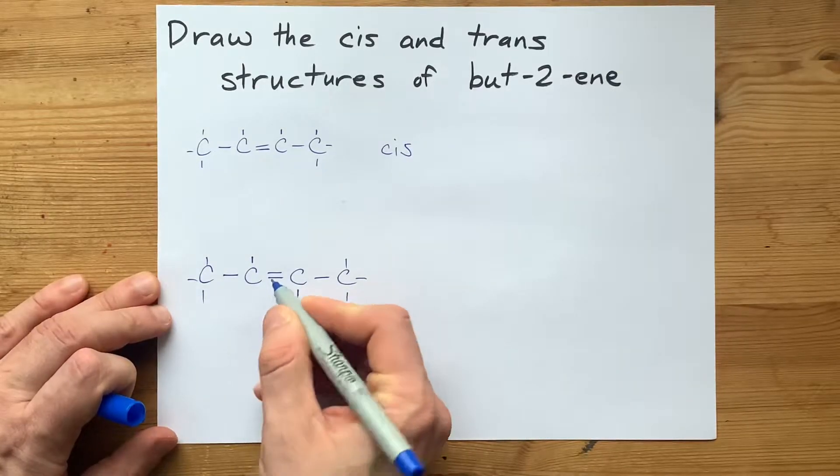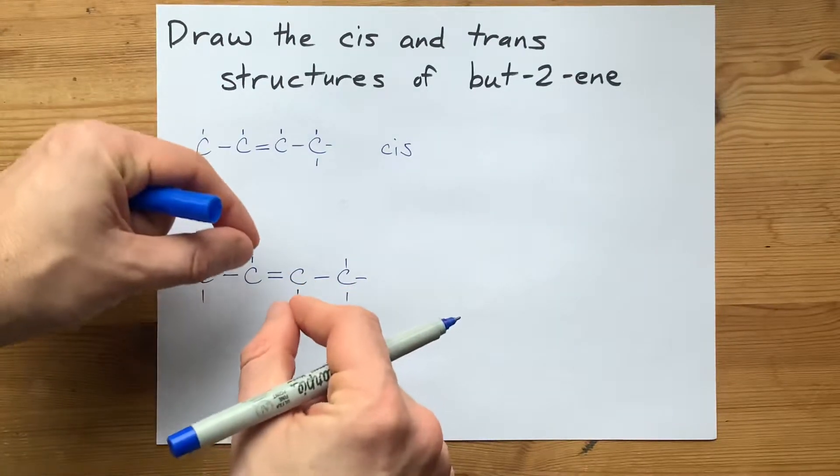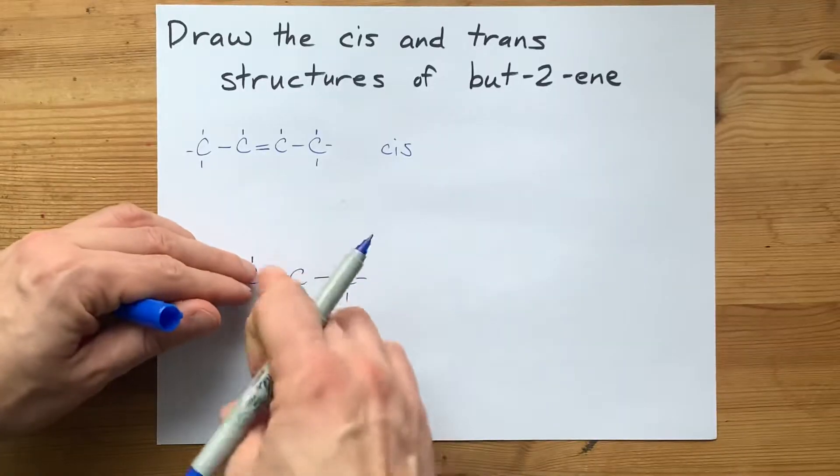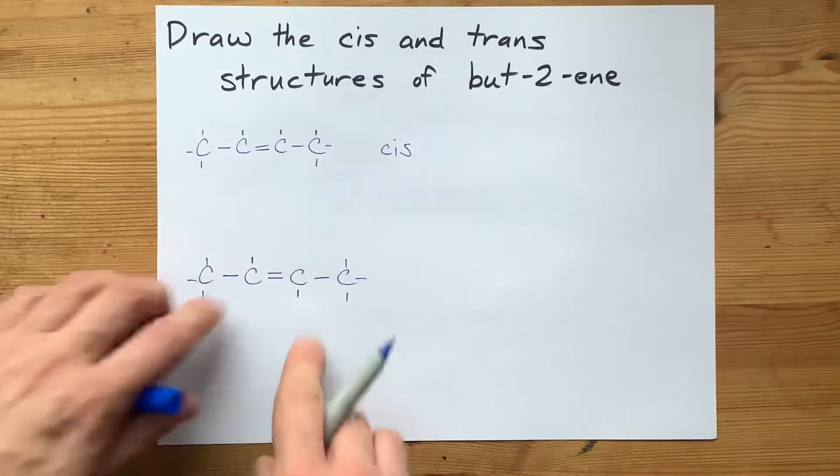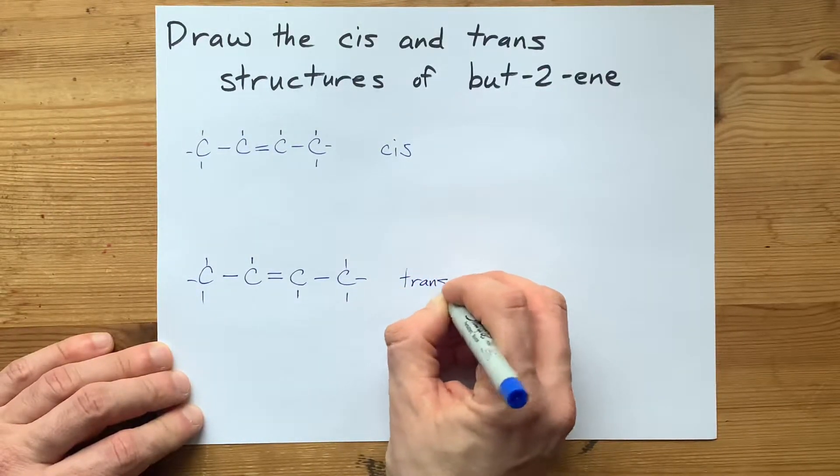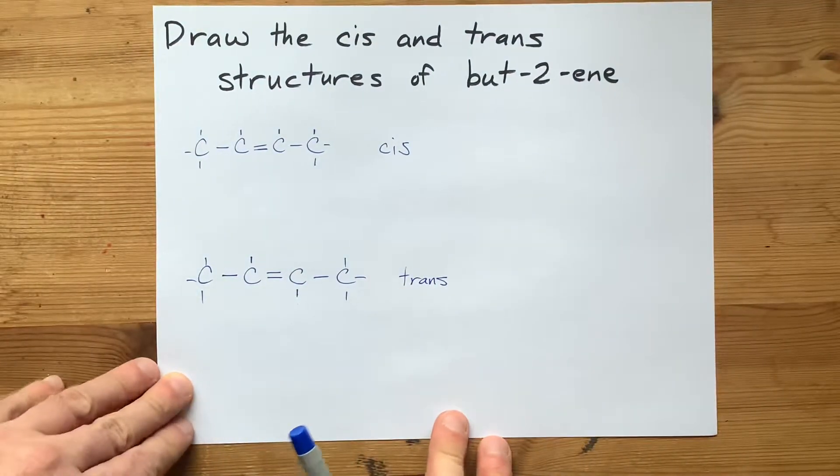This particular double bond cannot be rotated, and so you can't orient the two hydrogens here. You can't crack it open and turn it so that that hydrogen is on the top side instead of the bottom side. That's why cis and trans isomers only exist for things with double bonds or rings, which also can't be cracked open.